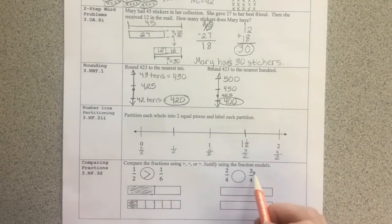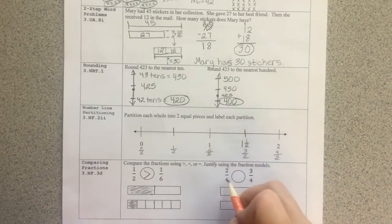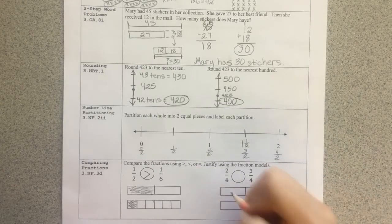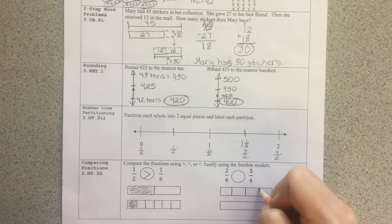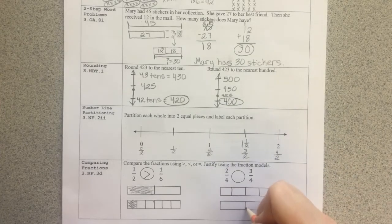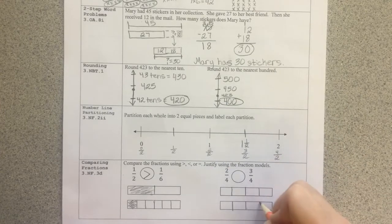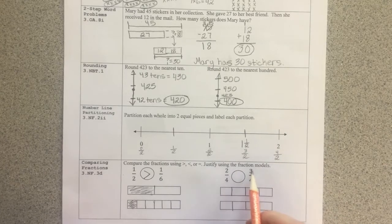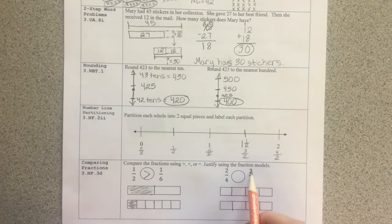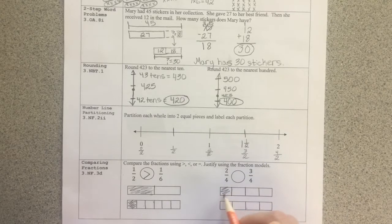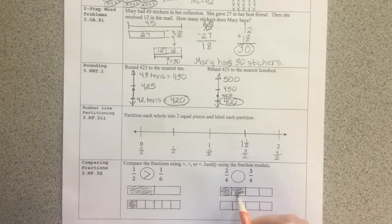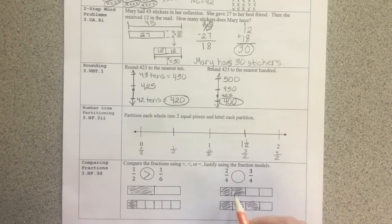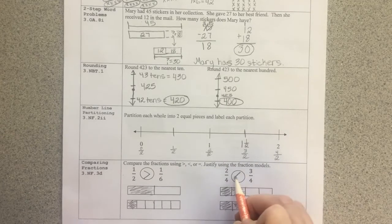Here I have two fourths versus three fourths. Notice that I have common units this time. Both of my wholes will be broken into fourths. In other words, four equal pieces. So the units are the same size. What I'm really comparing here is the numerators, which tells me the number of units I have. So I have two of my fourths versus three of my fourths. And two fourths is less than three fourths.